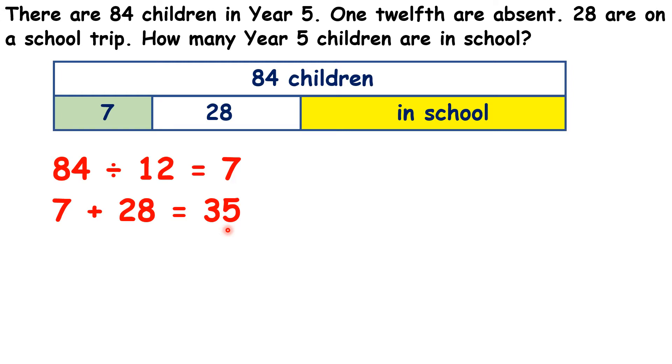So how can we work out how many are in school? Well there are 84 children in year 5, so if we take away the 35 who are not in school, we get 49. So 49 children are in school.